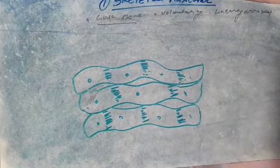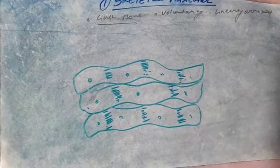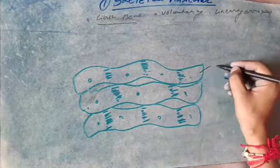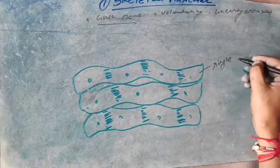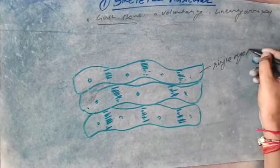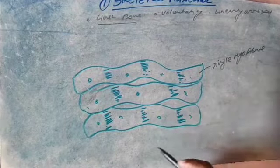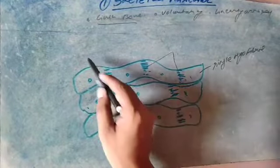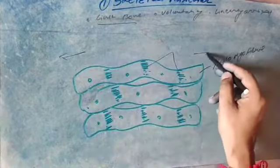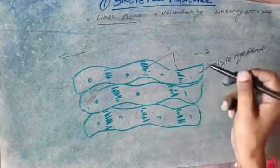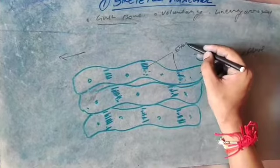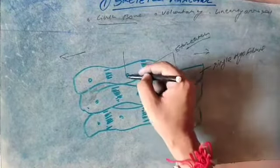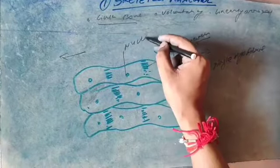The diagram you can see is actually the diagram of skeletal muscular tissues. Now, labeling: this is the single myofibril. And this is the striations — the stretch pattern visible in the tissue.